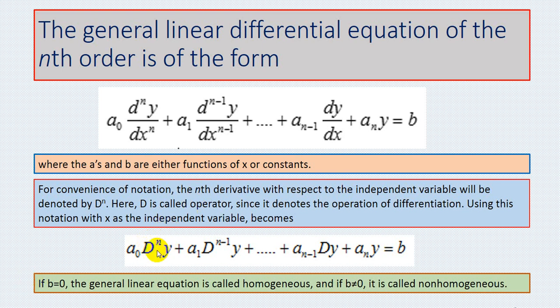Here, D is called an operator since it denotes the operation of differentiation. Using this notation with x as the independent variable, the equation becomes: a0·D^n·y plus a1·D^(n-1)·y, and so on, plus an·y equals b. If b equals zero, the general linear equation is homogeneous. If b is not equal to zero, it is called a non-homogeneous equation.